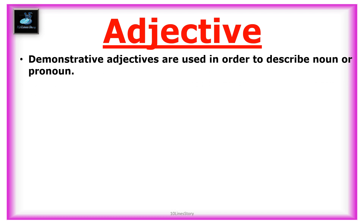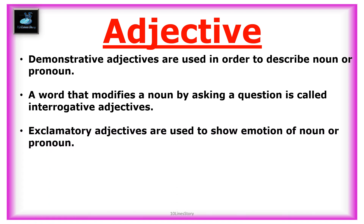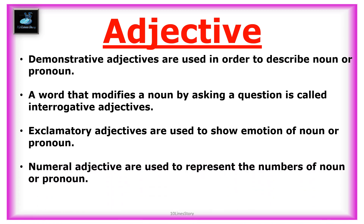Demonstrative adjectives are used in order to describe a noun or pronoun. A word that modifies a noun by asking a question is called an interrogative adjective. Exclamatory adjectives are used to show the emotion of a noun or pronoun. Numeral adjectives are used to represent the number of a noun or pronoun.